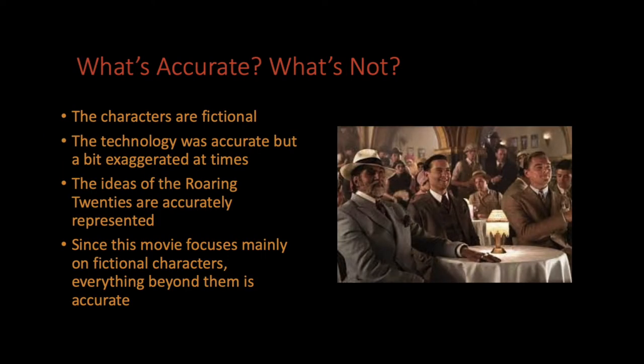So what's accurate and what is not? The characters are fictional — it's not based on real people. But the technology was accurate; there was nothing out of place in terms of that. There were things that were a bit exaggerated at times, but I think that was more for effect, to add emphasis to certain poignant moments in the story. The ideas of the Roaring Twenties — consumerism, the bustling urban life, and pursuing the American dream, becoming a self-made man — are very constant themes in this movie. And since this movie focuses mainly on fictional characters, everything beyond them is accurate.